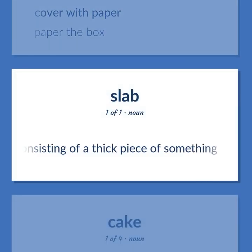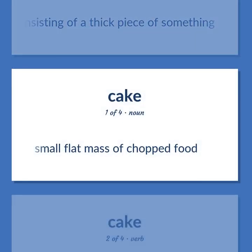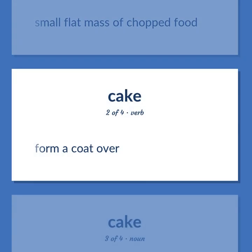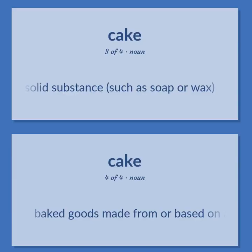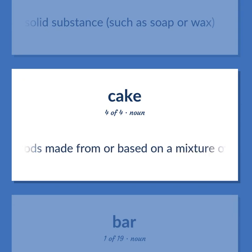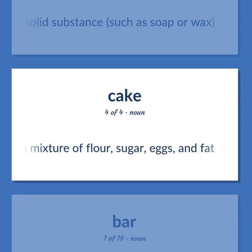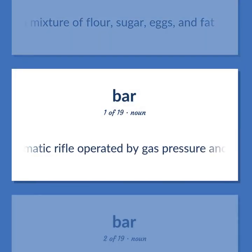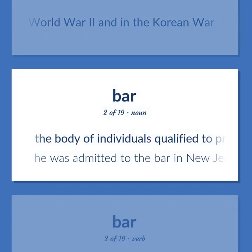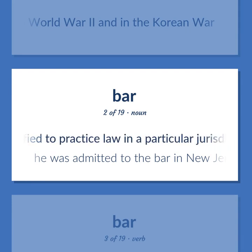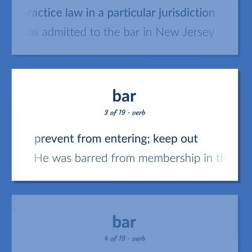Cake: a block consisting of a thick piece of something. A small flat mass of chopped food. Form a coat over. A block of solid substance, such as soap or wax. Baked goods made from or based on a mixture of flour, sugar, eggs, and fat. Bar: a portable .30 caliber automatic rifle operated by gas pressure and fed by cartridges from a magazine, used by United States troops in World War I, World War II, and the Korean War. The body of individuals qualified to practice law in a particular jurisdiction. He was admitted to the bar in New Jersey. Prevent from entering; keep out. He was barred from membership in the club.